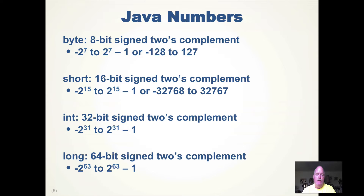In Java, several different sizes of numbers are supported. A byte is an 8-bit signed two's complement, with values between minus 128 and 127. A short is a 16-bit two's complement. An int — the standard integer — is a 32-bit signed two's complement number, and longs are 64-bit. If you know your data values will be small, you can store them in bytes to save memory in your data structures, though with gigabytes of RAM available today it's less of a concern — but it is a good way to compact your data.